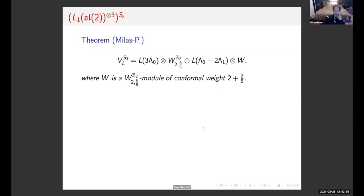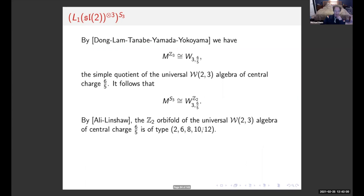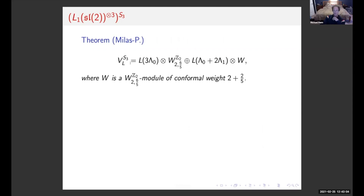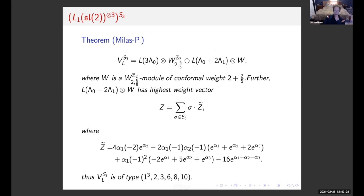Putting it together with the lattice VOA decomposition, V_L^{S₃} — the rank 3 diagonal lattice — gives level 3 SL₂ together with the Z₂ orbifold of that W-algebra, plus direct sums with modules for each. We compute a highest weight vector for these modules: it's the orbit sum of a vector Z̃, where Z̃ is given explicitly. The type of this orbifold is (1,1,1) for the SL₂ part and (2,3,6,8,10) for the W-algebra part.